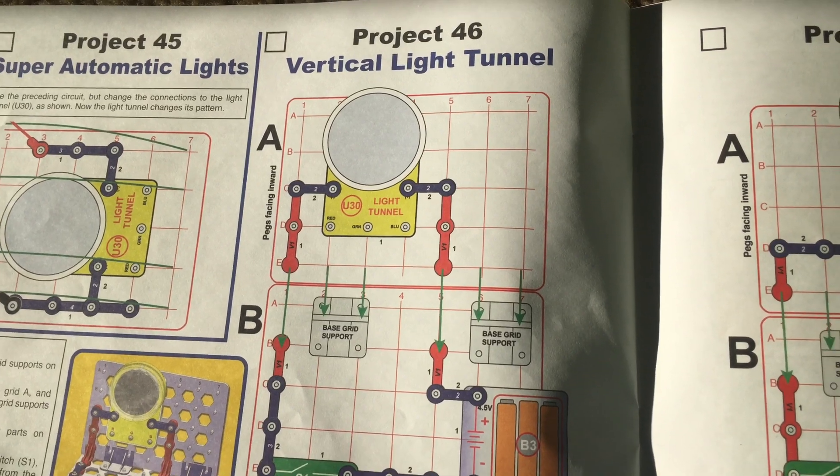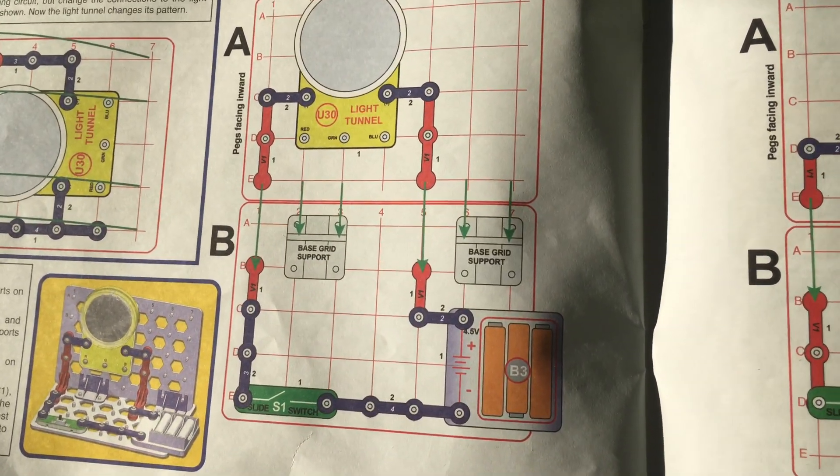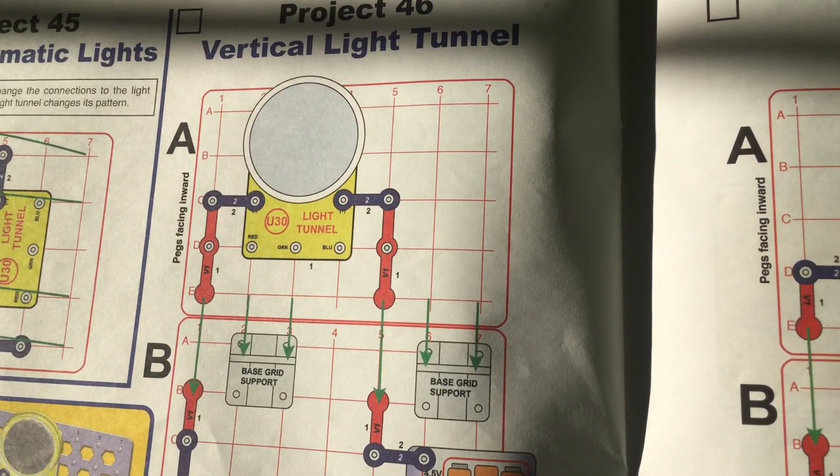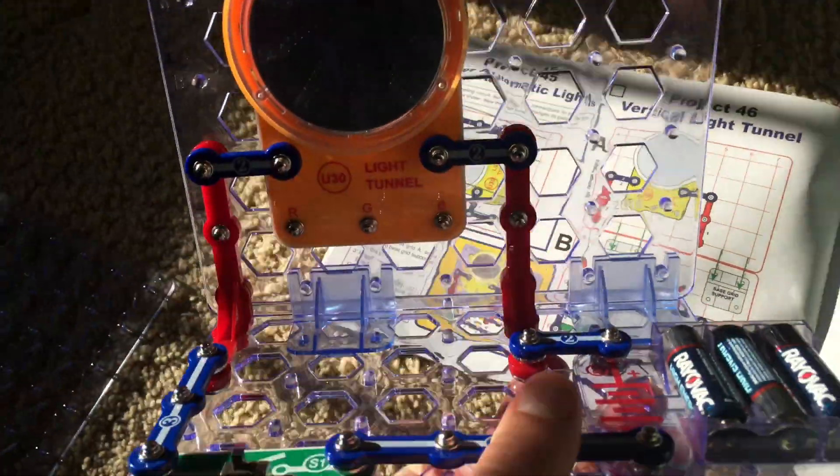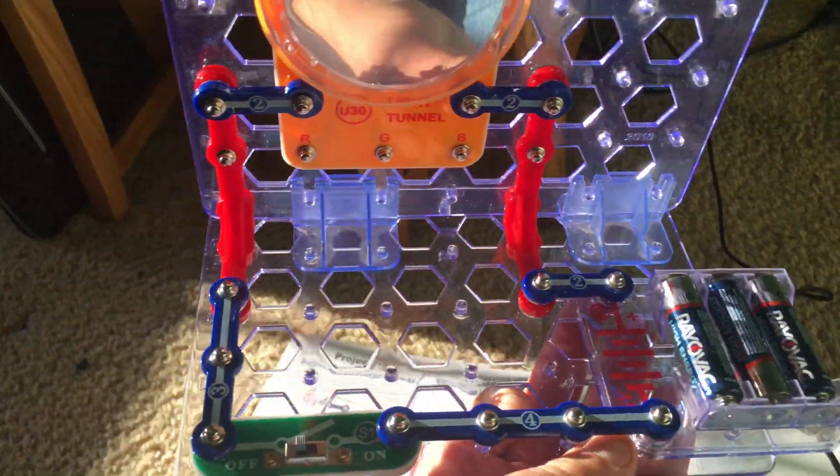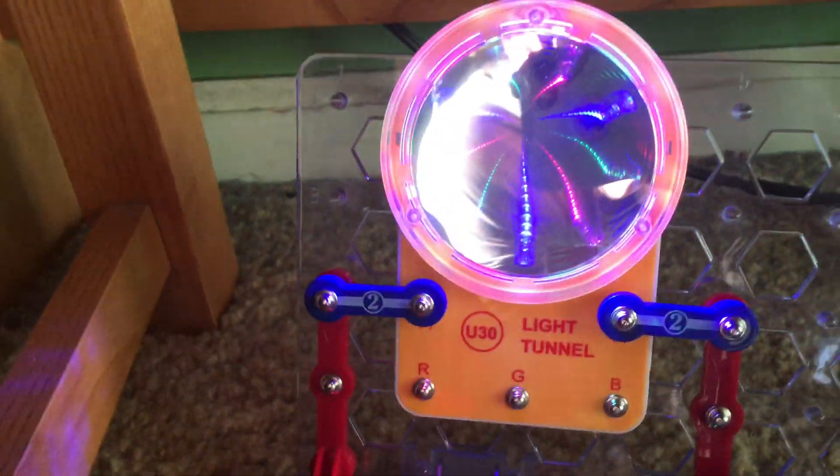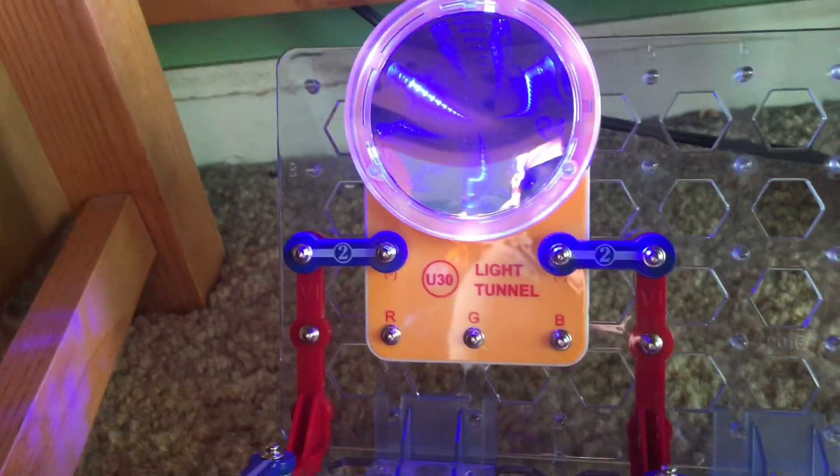Project 46, Vertical Light Tunnel. We will use one small horizontal base grid, and then one small vertical one for this project. We will build this circuit. I'm going to turn on the slide switch. And, you'll see a spectacular light show from the light tunnel.